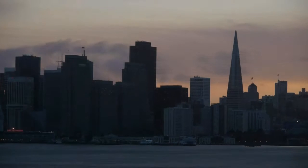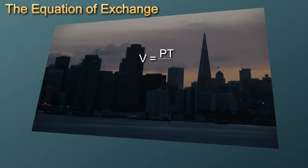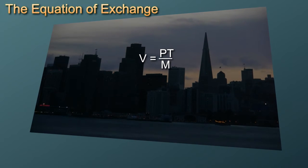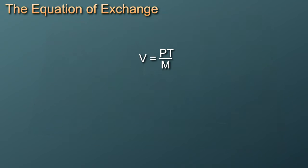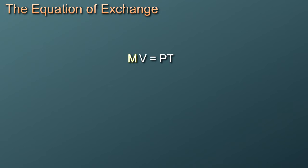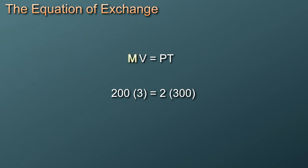It will be useful to rearrange our formula. If V equals PT divided by M, and we multiply each side of the equation by M, then we have MV equals PT times M over M. Since M over M always equals 1, we can rewrite it as MV equals PT. In our case, 200 times 3 equals 2 times 300. This is sometimes called the equation of exchange, and will be true by definition for any level of output and money stock — on our island or indeed for any economy anywhere.